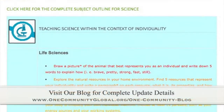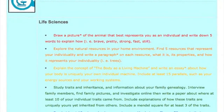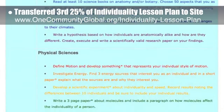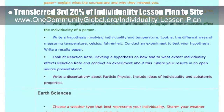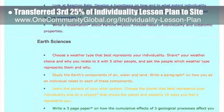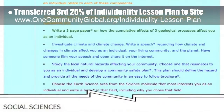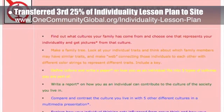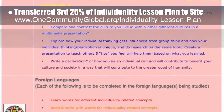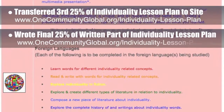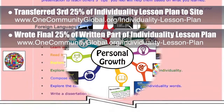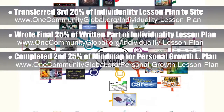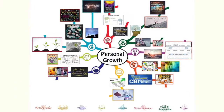This week, the core team — which includes the Pioneer members plus those helping who don't wish to be individually acknowledged — transferred the third 25% of the written content for the individuality lesson plan to the website, as you see here. This lesson plan, purposed to teach all subjects to all learning levels and any learning environment using the central theme of individuality, is now 75% completed on our website. Behind the scenes, we wrote the final 25% of the written part of the individuality lesson plan. We also completed the second 25% of the mind map for the personal growth lesson plan, bringing it to 50% complete, which you see here.